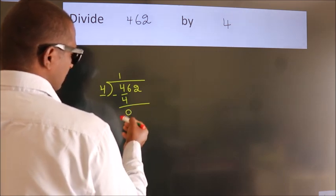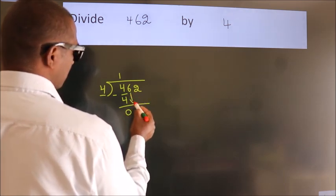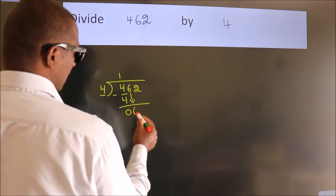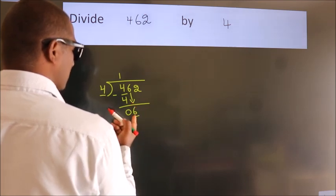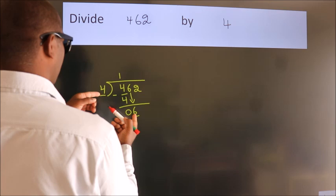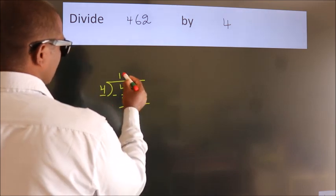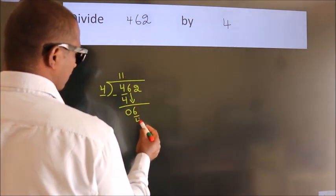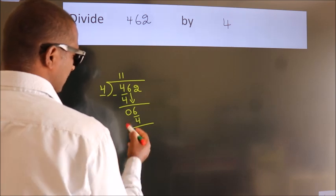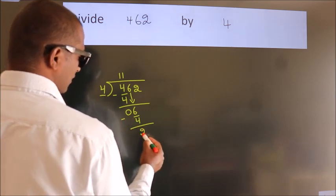After this, bring down the next number. So, 6 down. A number close to 6 in the 4 table is 4 once, 4. Now we subtract. We get 2.